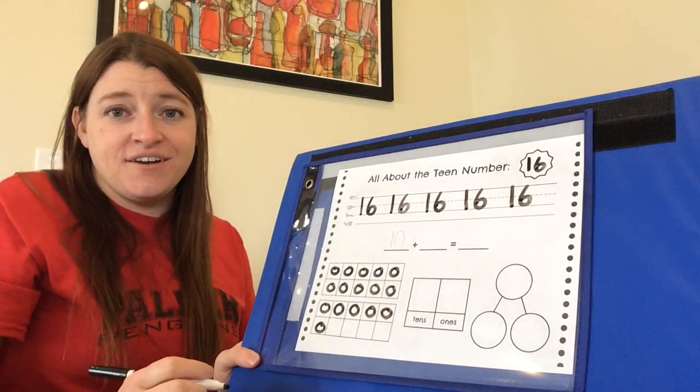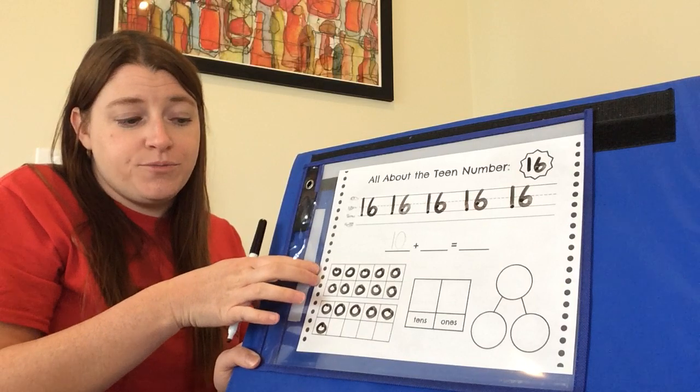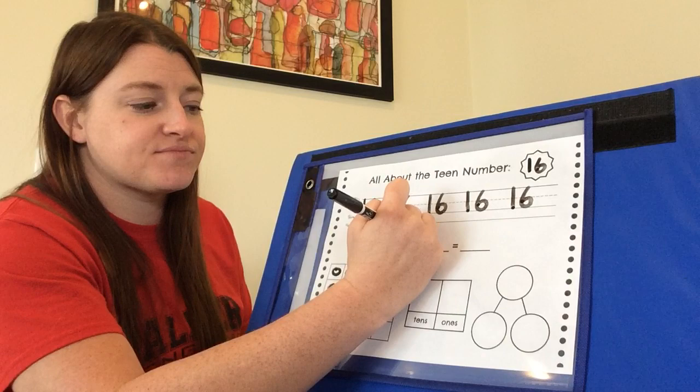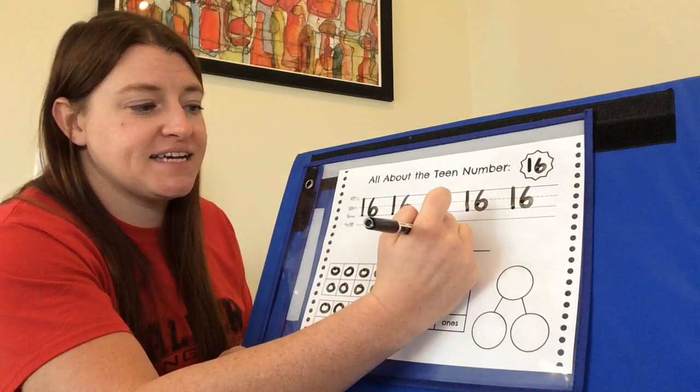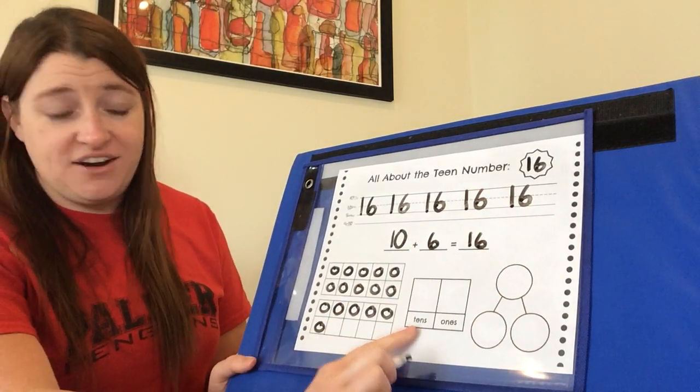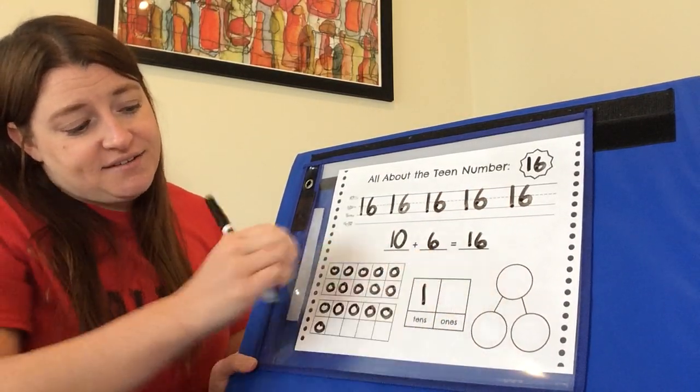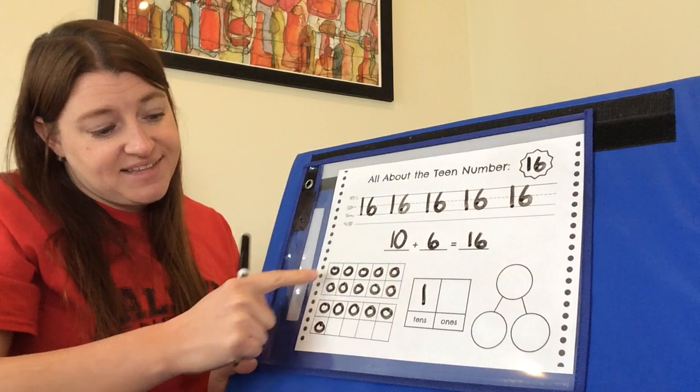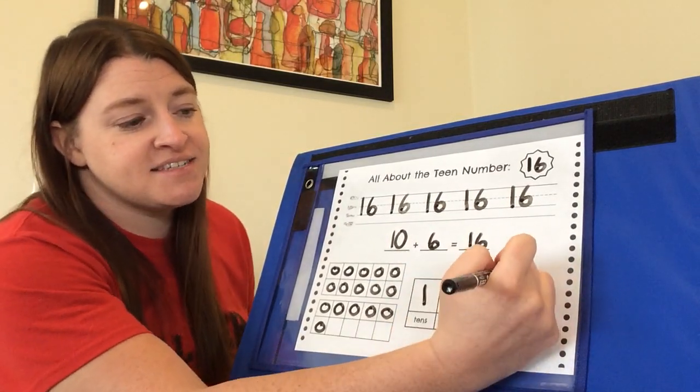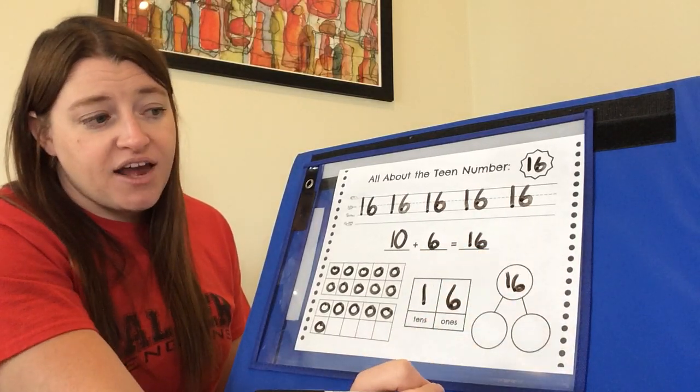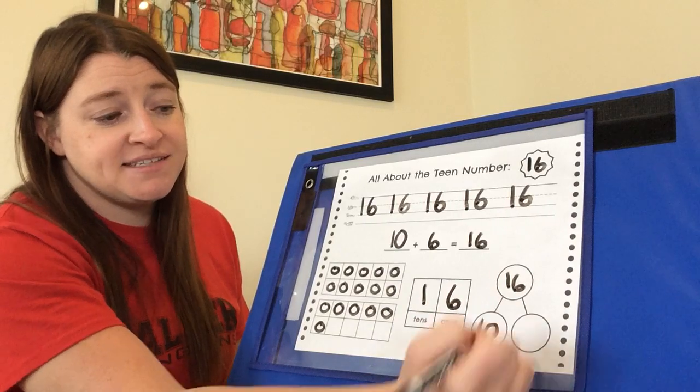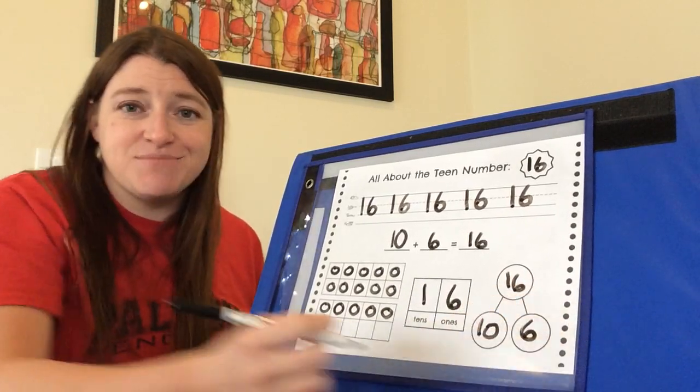So in our 16, we have a group of 10 and six more ones. 10 plus six equals 16. And let's go ahead now and fill in our chart. One 10, that's right here, and six more ones. And then last is our number bond. 16 is our total. And our parts that we're showing are a group of 10 and six more ones.